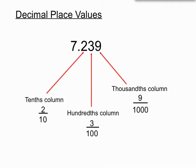Let's just remind ourselves of the decimal places. The first decimal place to the right of the decimal point is the tenths column. The next one is the hundredths column, and the third decimal place after the decimal point is the thousandths column.